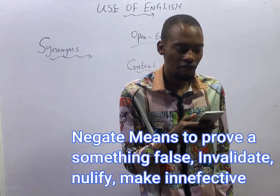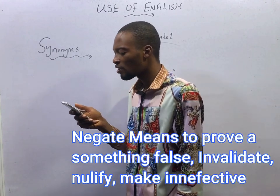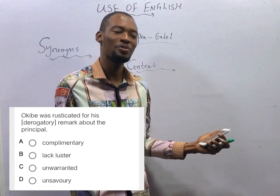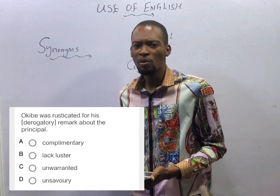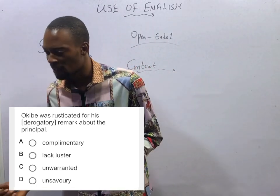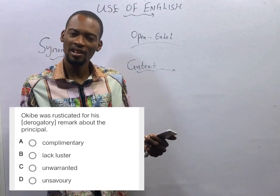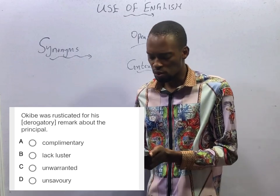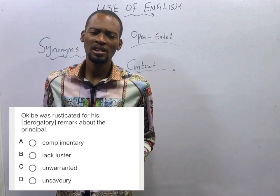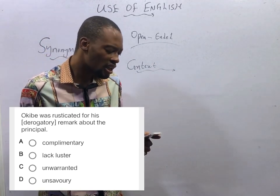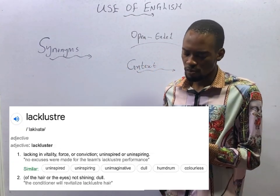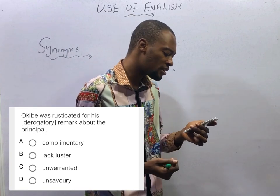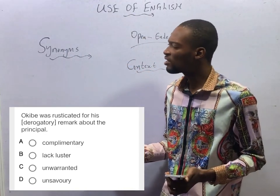'Okibe was rusticated for his derogatory remark about the principal.' The opposite of derogatory remark is complementary remark. But we are dealing with synonyms. If he was sent away for his derogatory remark, the synonym should be rude or offensive. Complementary is the opposite of derogatory. Unsavory means morally offensive, unpleasant, or unsuitable. So that is the best synonym of derogatory.